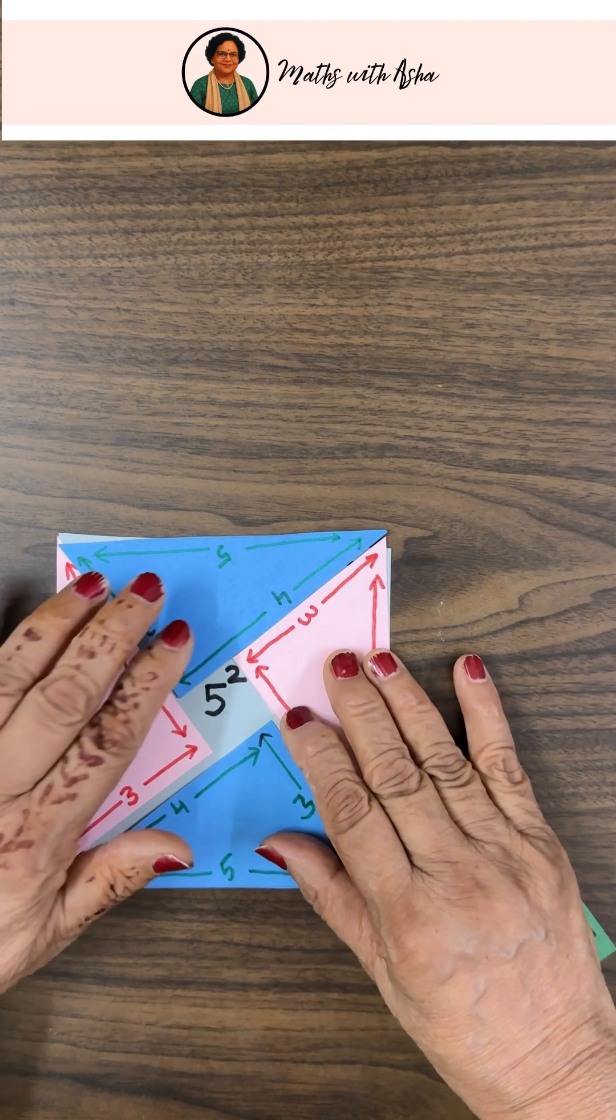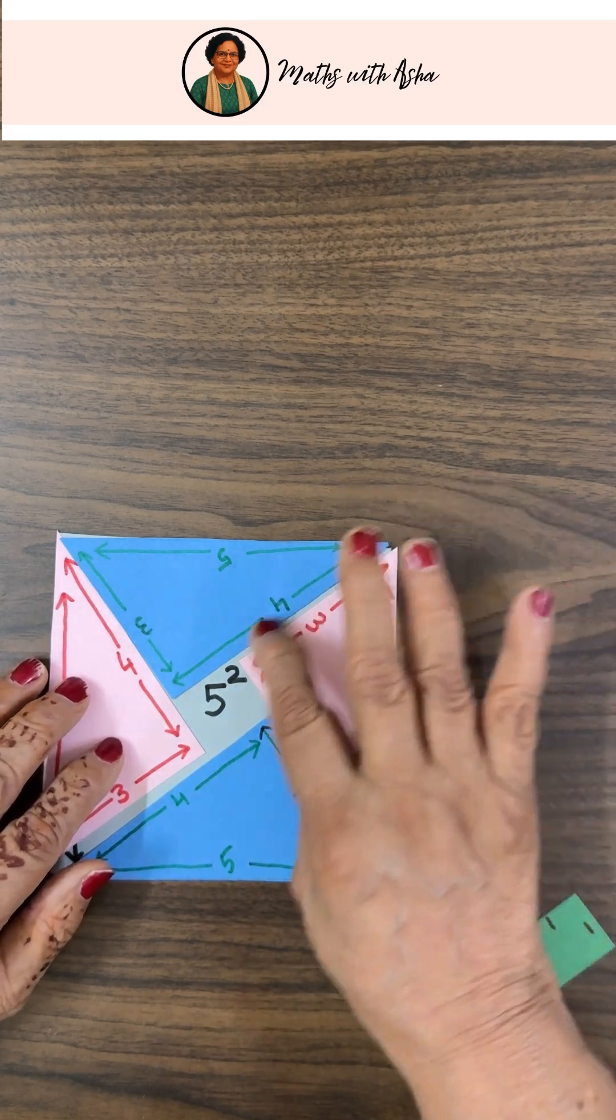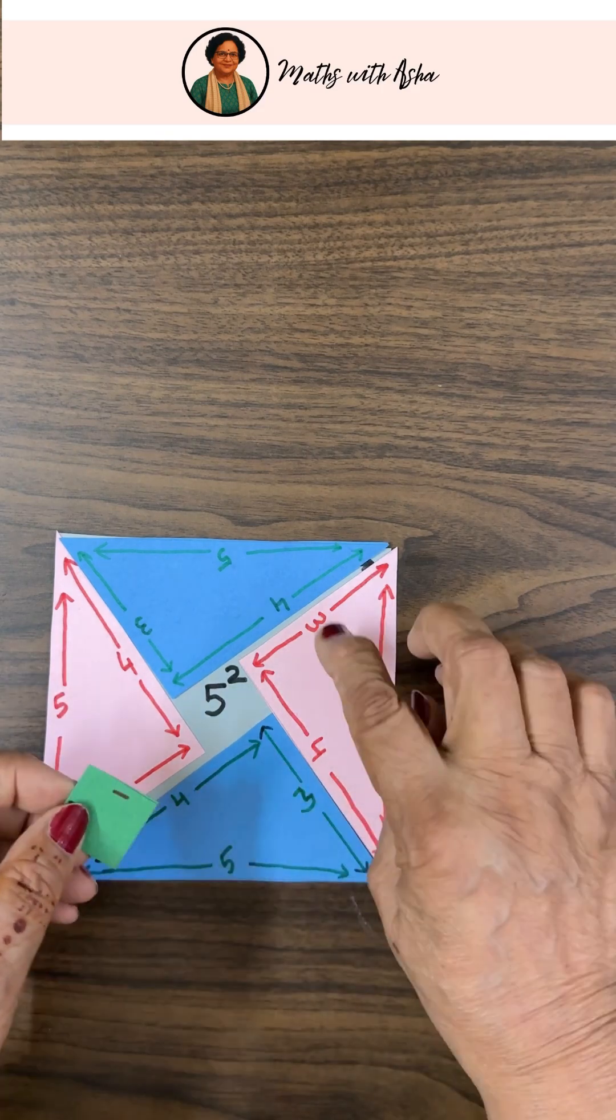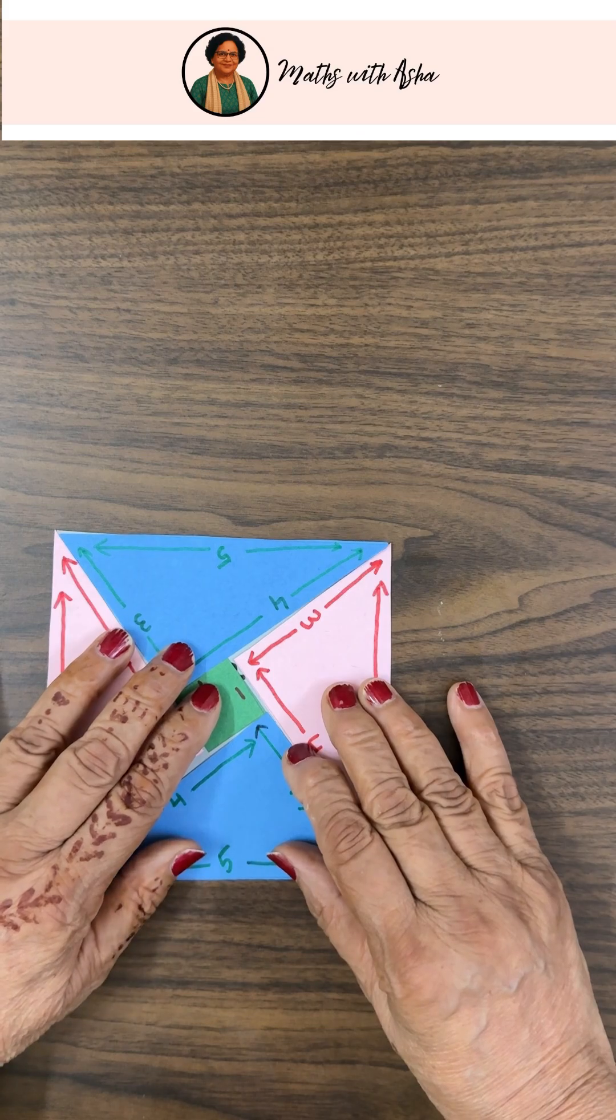Inside, you have a square. And what is the side of that square? It is 4 minus 3 in this case, or it is the difference of the length of the two legs. So it is 1.